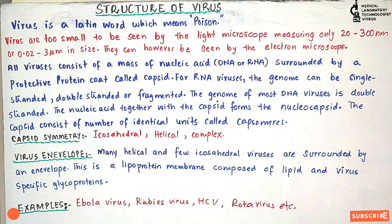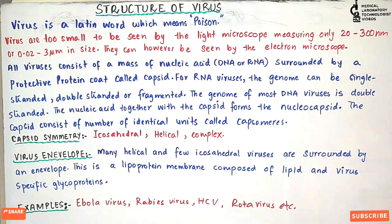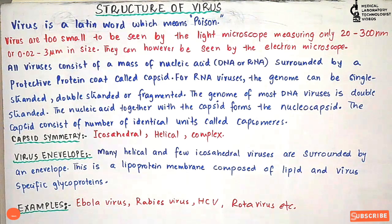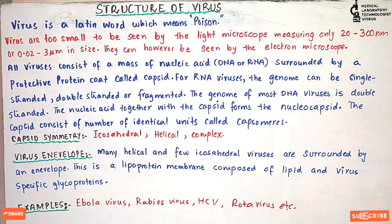The capsid consists of a number of identical units that we call capsomeres. These capsomeres attach together to form the capsid. The symmetry or pattern of the capsid is one of the features used to classify viruses.